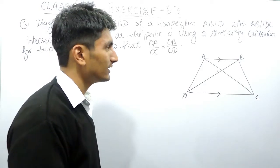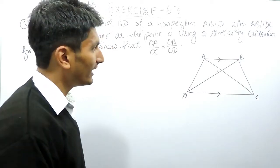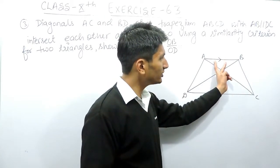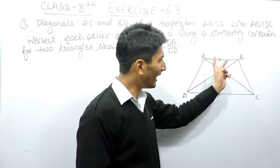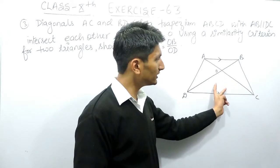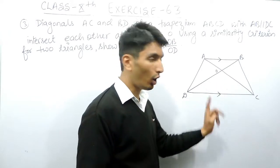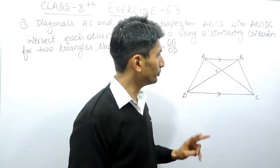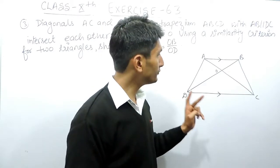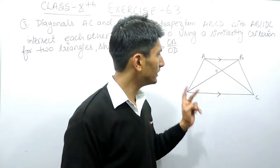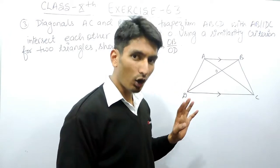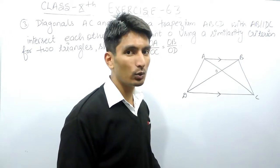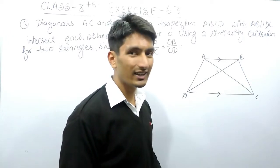How do we prove two triangles similar? You have to prove that all three angles of one triangle are equal to the corresponding three angles of the other triangle. However, you need not prove all three angles — you just need to prove two angles, because if two angles are already equal, the third angle will automatically become equal. No need to prove the third angle.